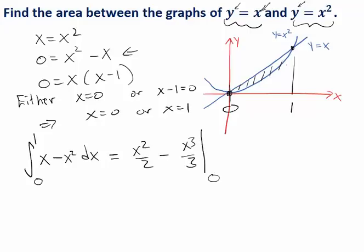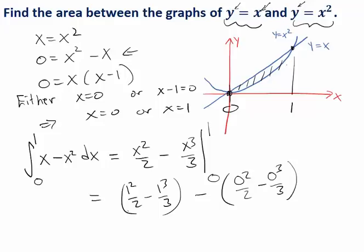Once you know that this is an antiderivative, we can plug in the endpoints. So we're going to get one squared over two minus one cubed over three minus zero squared over two minus zero cubed over three, and the total there is one sixth. So the area between the curves is one sixth.